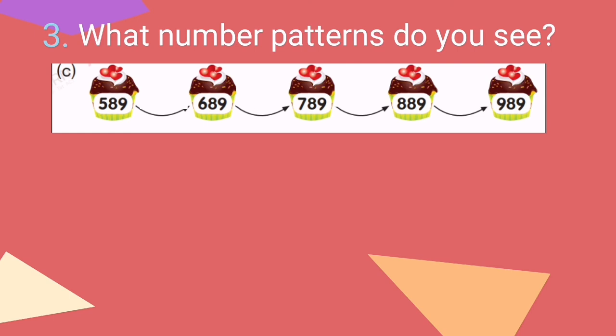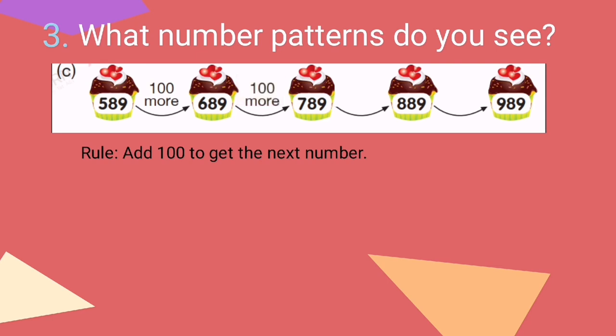For letter C, what can you notice about the number patterns? We're going to add 100 to get the next number. So 589 plus 100 is 689, then add 100 more it will become 789, then 100 more gives 889, and the last number is 989.